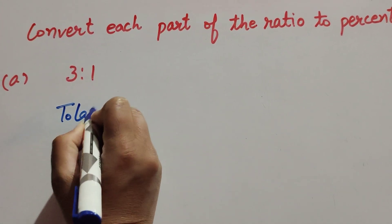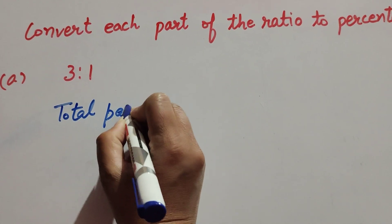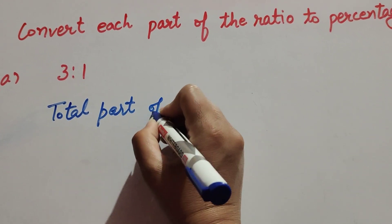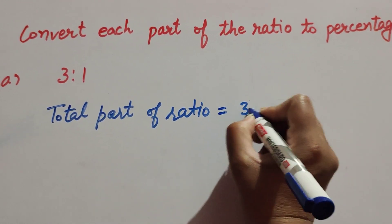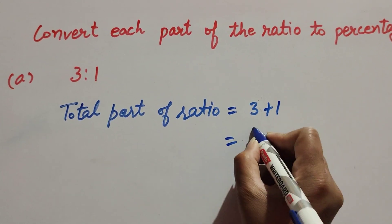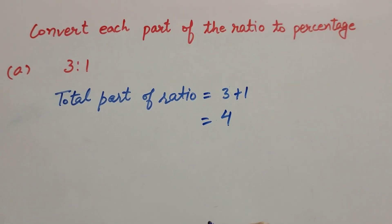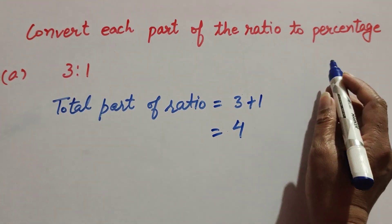Total part of ratio, it is equal to 3 plus 1. We add the given ratio and it is equal to 4.